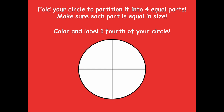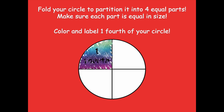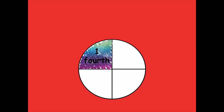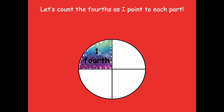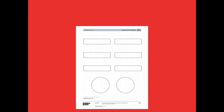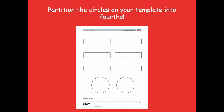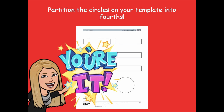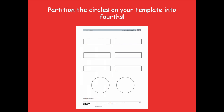Pause if you need more time. Here's one fourth colored and labeled. Let's count the fourths as I point to each part — one fourth, two fourths, three fourths, and four fourths, which is also one whole. Now grab your lesson template and partition the two circles on your template into fourths. Pause the video, partition those two circles into fourths, and then click play when you're ready for the next step.